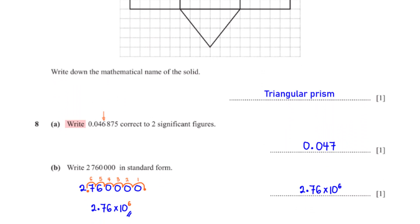Write 0.046875 correct to two significant figures. The second significant figure is 6. The number after 6, which is 8, is greater than 5, so we add 1 to 6, giving us 7. The numbers after 6 become 0. Since these zeros come after the decimal point, they are insignificant. So we have 0.047 rounded to two significant figures.